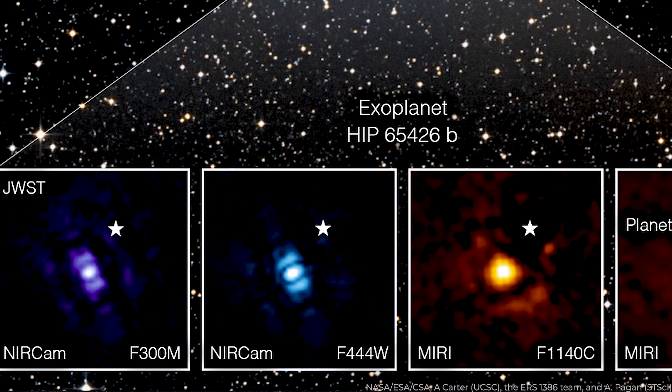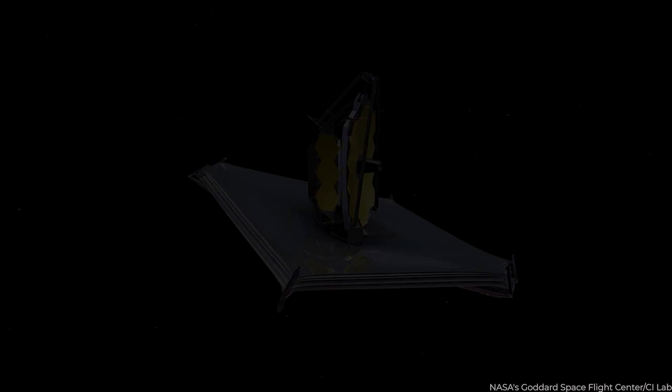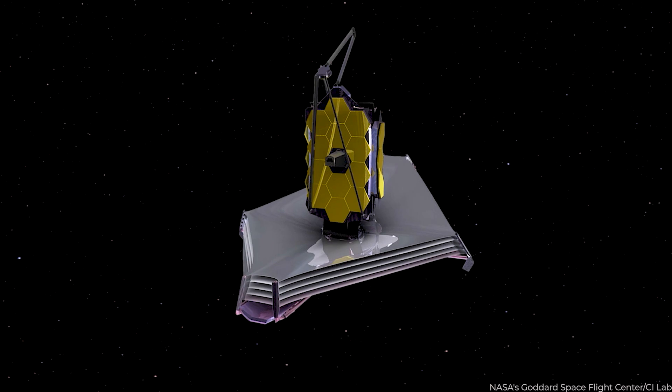In the near-infrared, the HIP-65426b planet is more than 10,000 times fainter than its host star, and just a few thousand times fainter in the mid-infrared. The planet appears as a slightly different shaped blob of light in each picture. This is due to the specifics of Webb's optical system and how it transforms light through various optics. Aaron Carter, a post-doctoral researcher at the University of California, Santa Cruz, described obtaining the image as though she was searching for treasure in space.